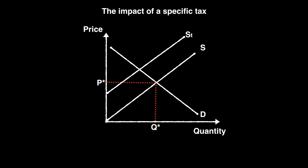The distance between the two supply curves is the value of our tax, as indicated by the green arrows. After the tax has been imposed, we can see the supply curve shifts leftward. The impact of a specific tax on a product with elastic demand is to reduce equilibrium quantity and raise price. However, it is important to note that the impact on price and quantity largely depends on the elasticity of demand for the product, as we'll see in the next slide.